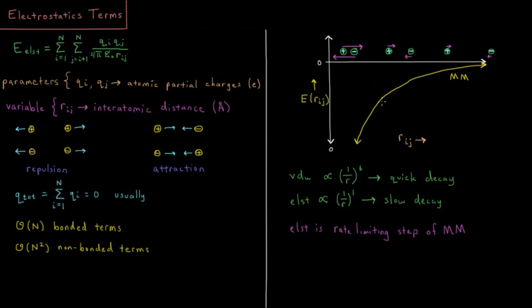It gets infinitely attractive or repulsive as you get infinitely close down to a bond length of zero, or not really a bond length, but an interatomic distance of zero.